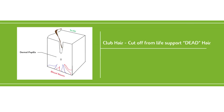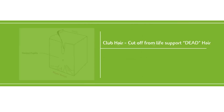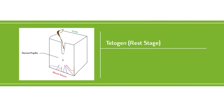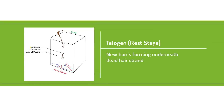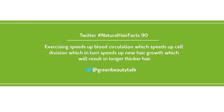After the catagen active transitional stage, your hair goes into the telogen, or rest, phase. Your clubbed hair strand remains dormant for one to four months. Somewhere within that time, underneath the dead hair strand, life is starting to form — an anagen stage is beginning all over again. The new baby hair strand feeds from the same dermal papilla, and if the old dead clubbed hair strand has not yet shed, the new baby hair growing underneath will sneak up behind it or beside it. Frequent exercising speeds up blood circulation, which speeds up cell division, which in turn speeds up hair growth, resulting in longer, thicker hair.